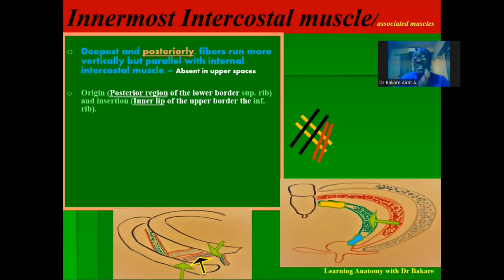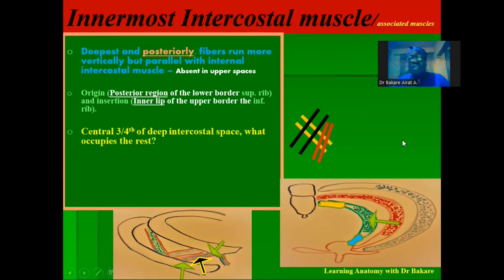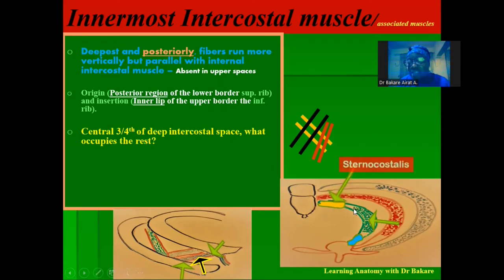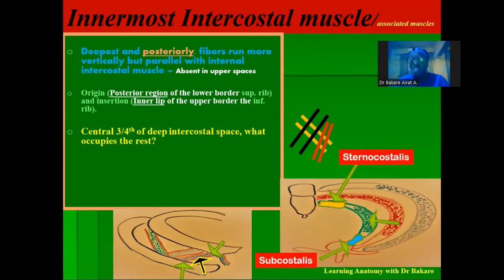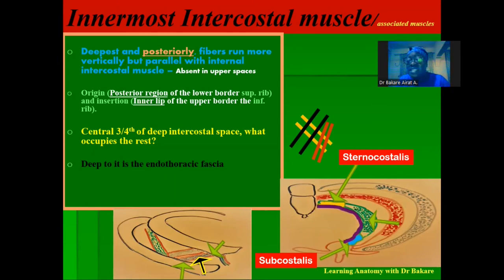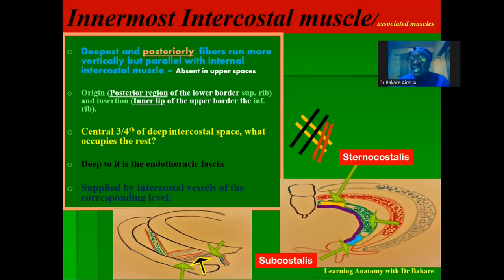The innermost intercostal muscle occupies the central two-fourths of the deepest region of the intercostal spaces. Anteriorly, this region is occupied by the sternocostalis — the muscle connecting the sternum with the costal cartilages. Posteriorly, we have the subcostalis. Deep to the innermost intercostal muscle is the endothoracic fascia, highlighted in purple, which lines the interior wall of the thoracic cavity. The innermost intercostal muscle is also supplied by the intercostal vessels.